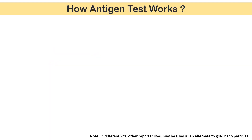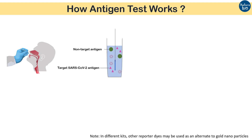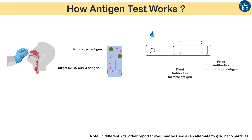Now let's see how the rapid antigen test actually works. A nasopharyngeal swab is taken from the suspect or patient and mixed with the buffer supplied with the kit to liberate viral antigens free in the solution. Next, a few drops of this sample solution are applied to the sample well of the detection chip. The chip is specially designed and contains the following key components or sections.